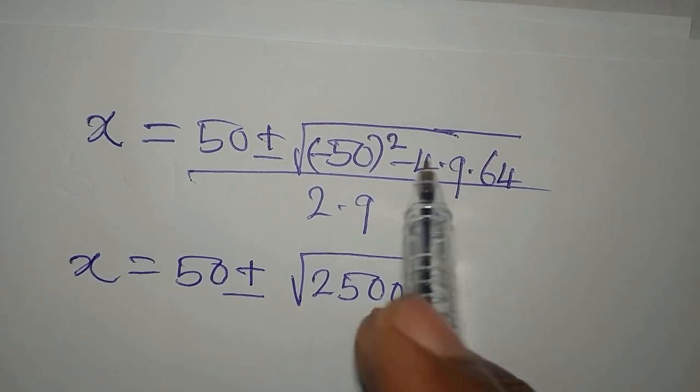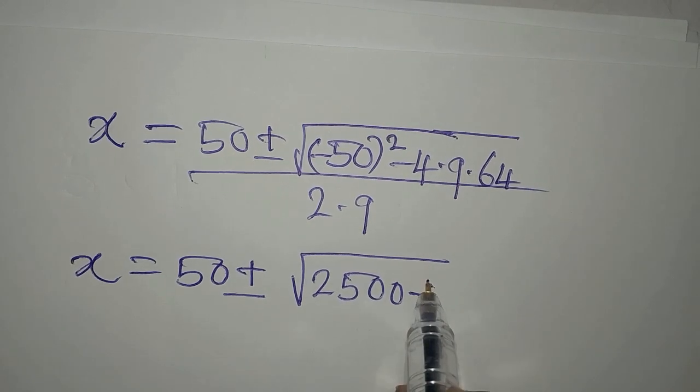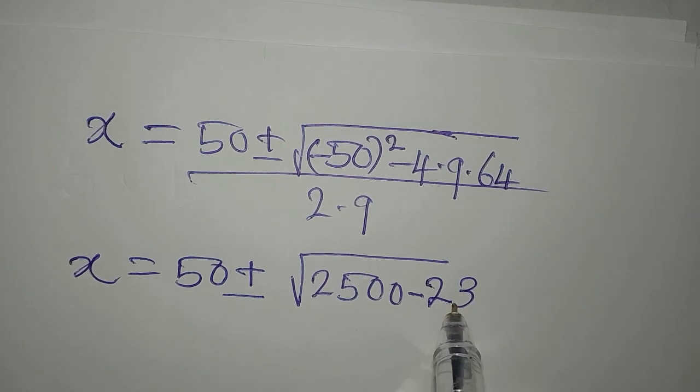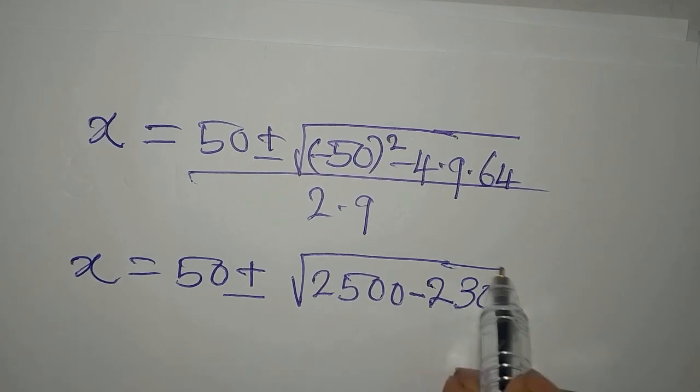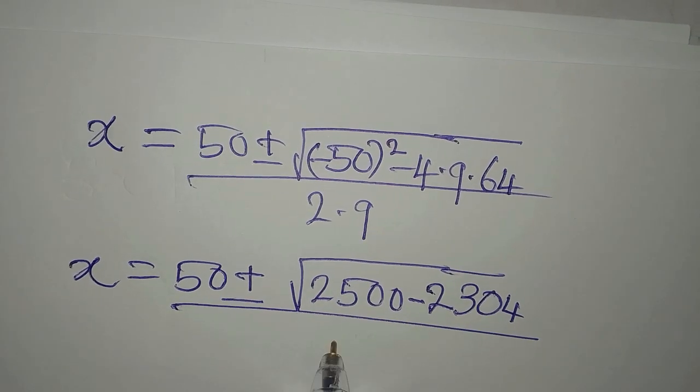Minus 4 times 9 times 64 is 2,304, divided by 18.